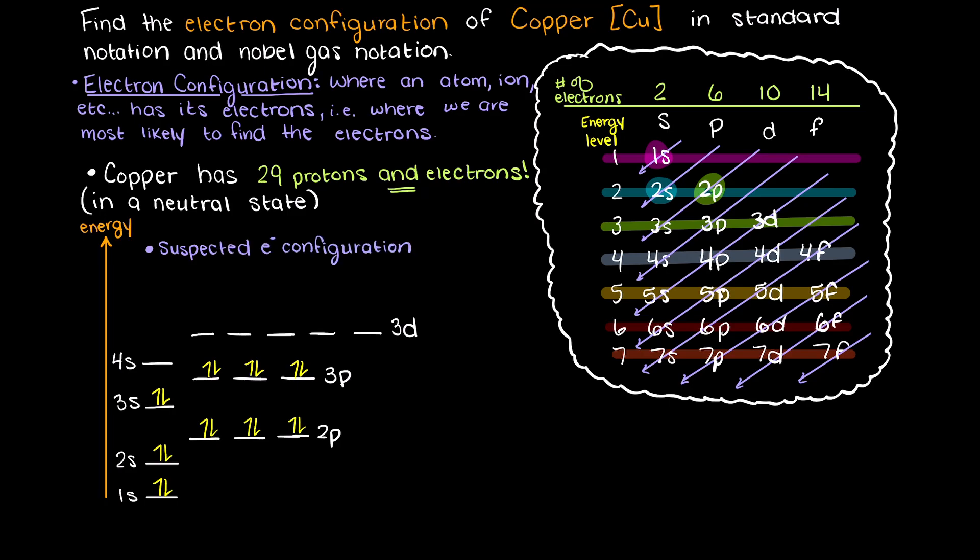If we were to continue in this manner, we would expect to have 4s2 and then 3d9, however, remember the exception that we talked about in our electron configuration exception video. The electrons do not like d9 as d10 is much more stable, therefore when we have d9, particularly for copper,